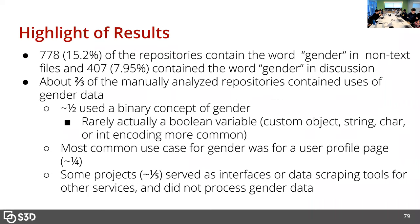Unfortunately, that wasn't very accurate. 15% of the repos in the sample had the word 'gender' in it, but only about two-thirds of those were actually using gender — I'm reporting approximate fractions because there are pretty wide error bars. The remaining third were other things. One common false positive was Unicode characters — some have the word 'gender' in them, like the transgender symbol. Natural language processing was another common false positive.